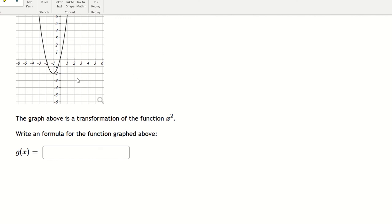The idea is that we have a transformation of a graph and we're trying to figure out the new equation for it, for this parabola. So the first thing we want to concentrate on is where the vertex is of this parabola.